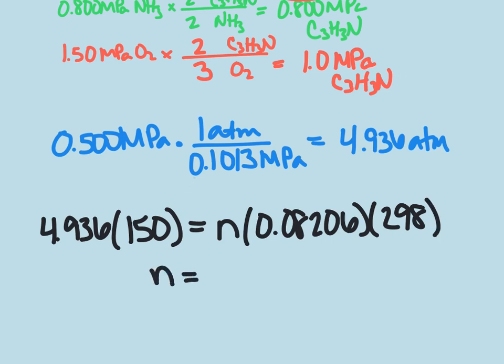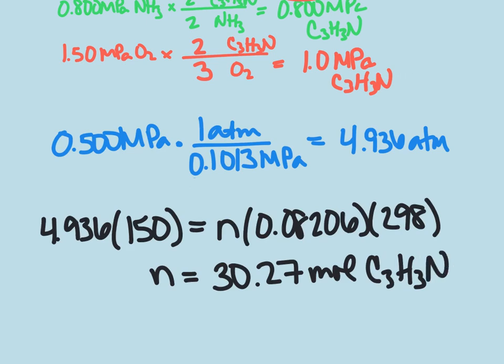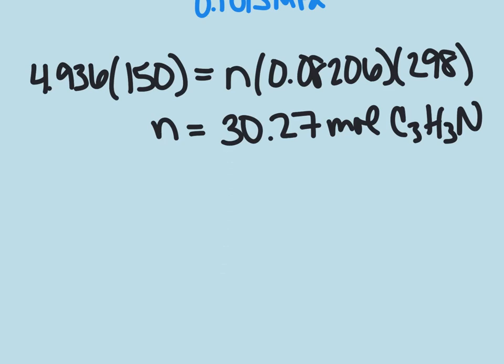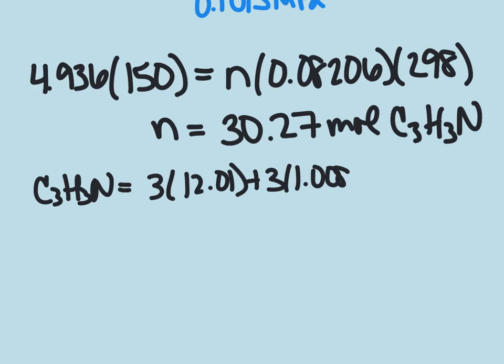So that means we have 30.27 moles. We will be able to produce 30.27 moles of C3H3N. And if we find our molar mass of C3H3N, it's going to be 3 times 12.01 plus 3 times 1.008 plus 14.01, which gives us a total molar mass of 53.06. We get that from our periodic table.